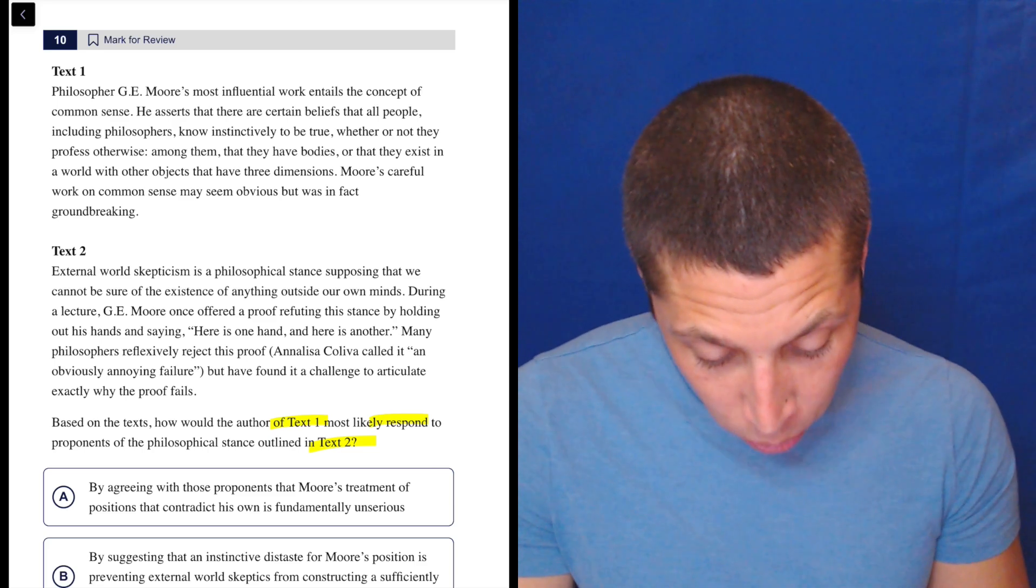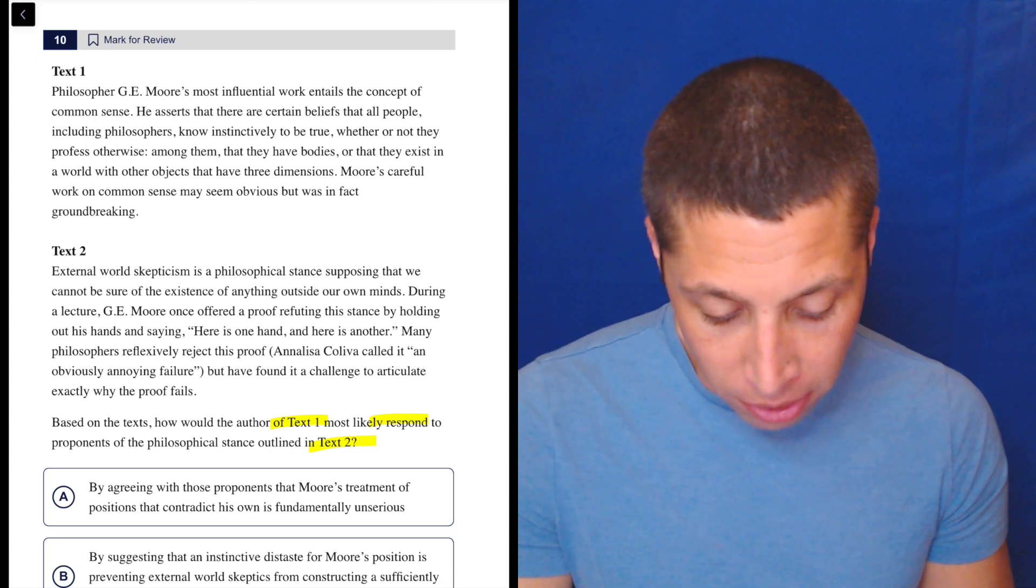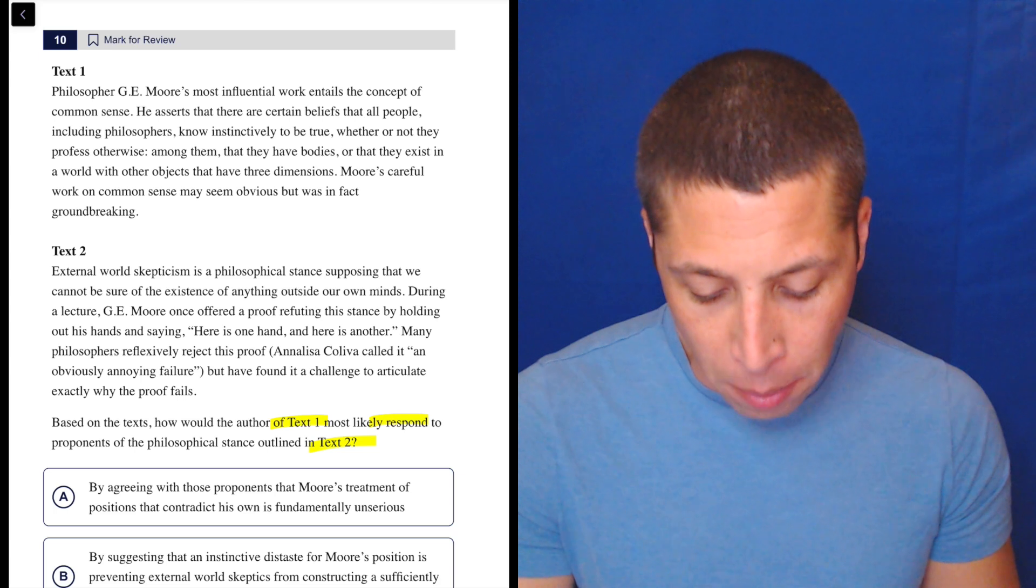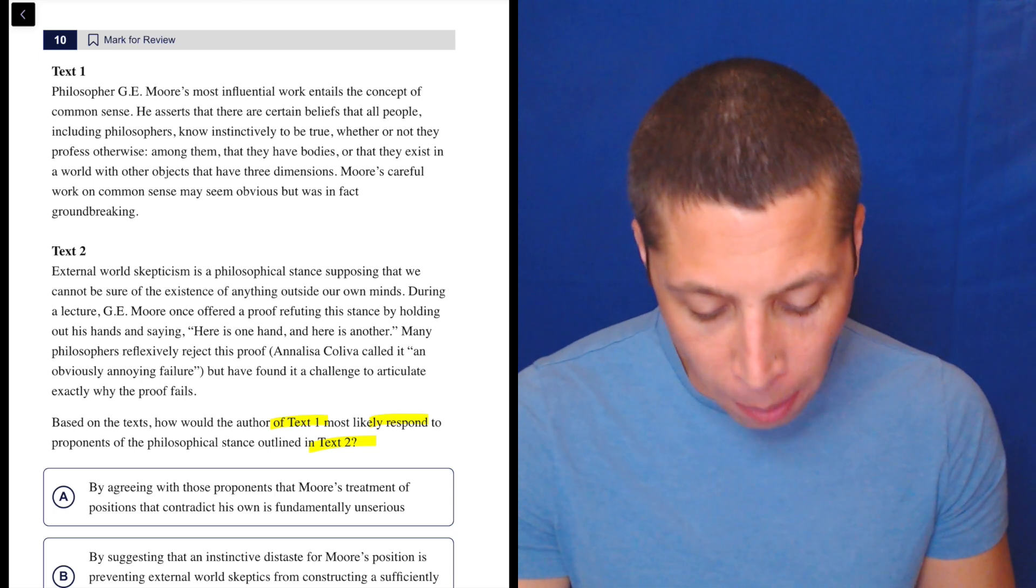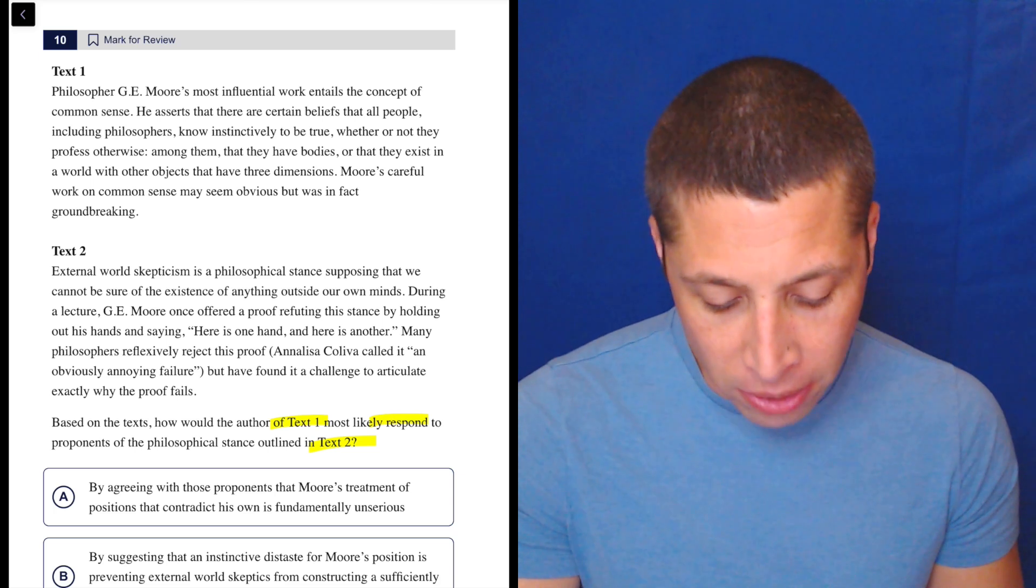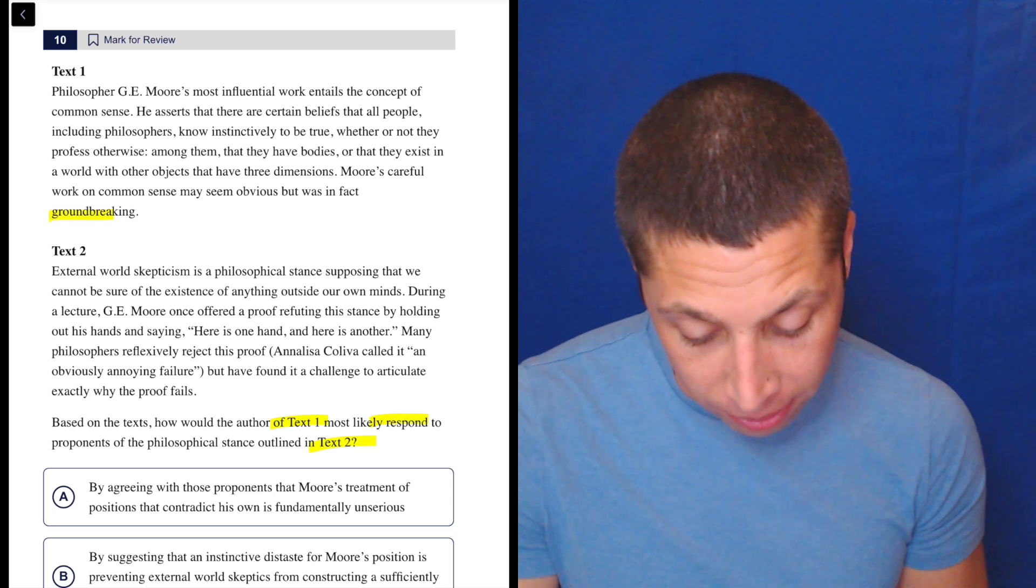Philosopher G.E. Moore's most influential work entails the concept of common sense. He asserts that there are certain beliefs that all people, including philosophers, know instinctively to be true, whether or not they profess otherwise. Among them, that they have bodies or that they exist in a world with other objects that have three dimensions. Moore's careful work on common sense may seem obvious but was in fact groundbreaking.